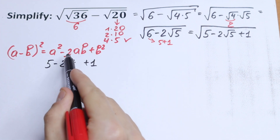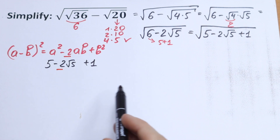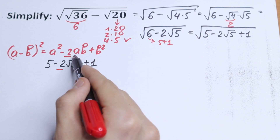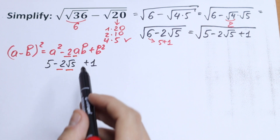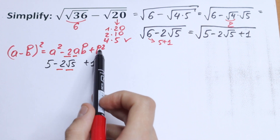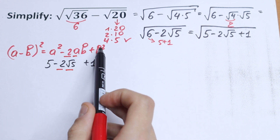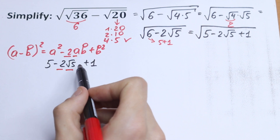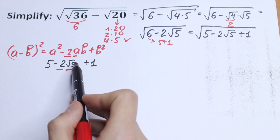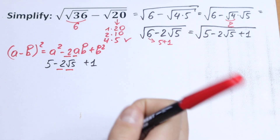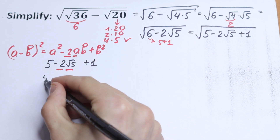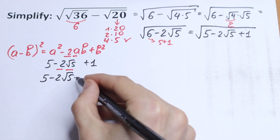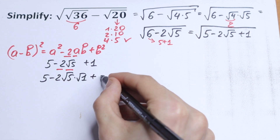We have a 2 and a 2 right here. Let the square root of 5 be our a. We have our a right here. And how can we create b? We have that b² equals 1. So let's write this 1 as the square root of 1. We will have 5 minus 2 times the square root of 5 times the square root of 1, plus 1.